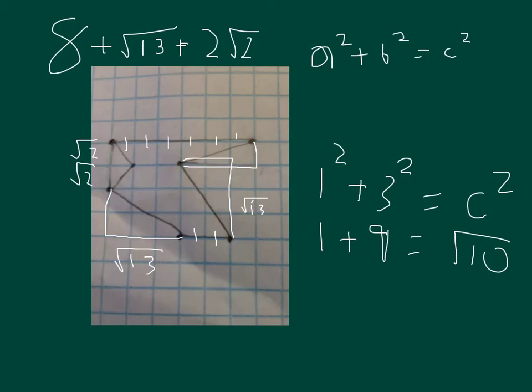So now we have to just add all the sides together. So now it's 8 plus 2 square root of 13 plus 2 square root of 2 plus square root of 10 equals the perimeter.